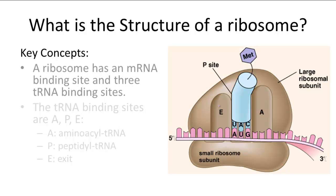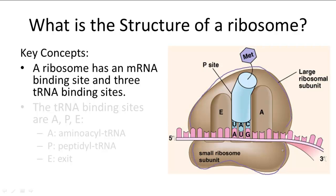The structure of ribosomes fits its function. A ribosome is made of two subunits: the large ribosomal subunit and the small ribosomal subunit. The mRNA will thread its way between these two subunits, waiting to be matched up with the anticodons on tRNA.